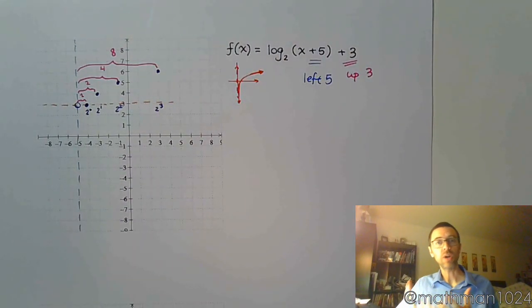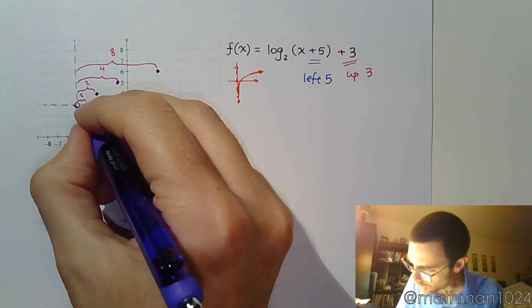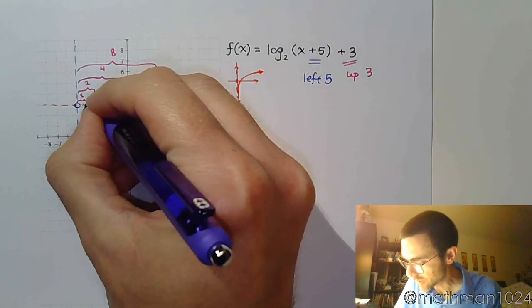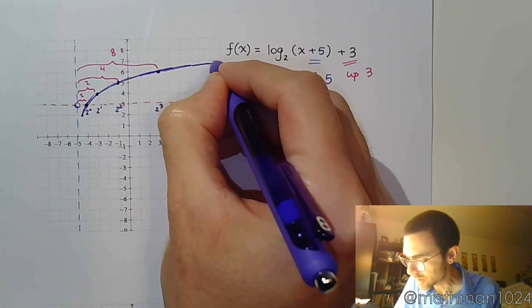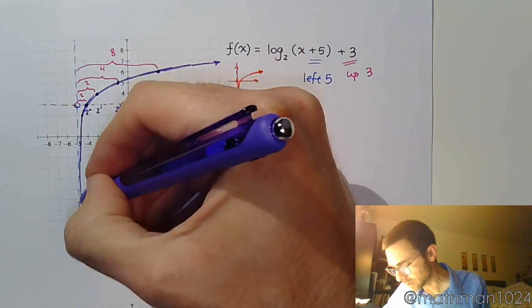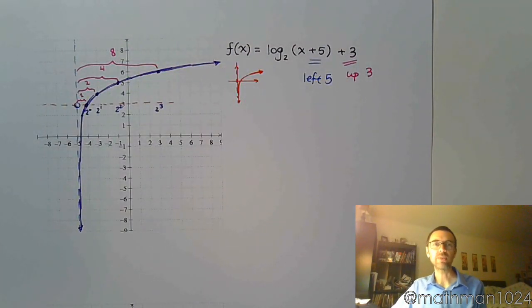So you see that pattern based on the base of the logarithm, how you are doubling as you go up every unit and halving as you go down. And so you have a graph that looks like that.